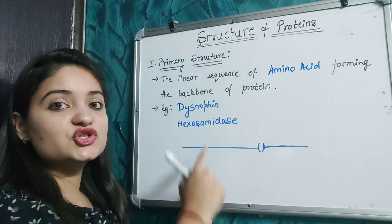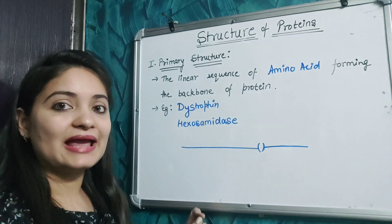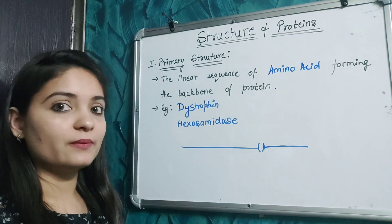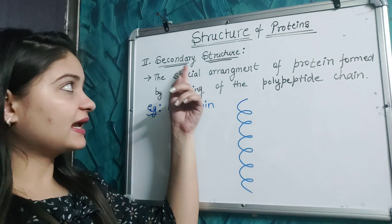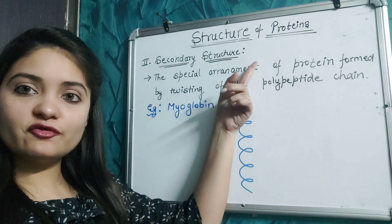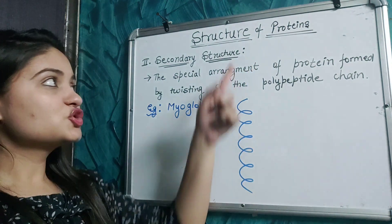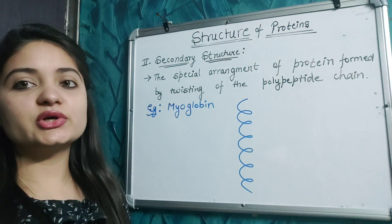Examples of proteins having primary structure are dystrophin and hexosaminidase. Now let's talk about the secondary structure of protein.